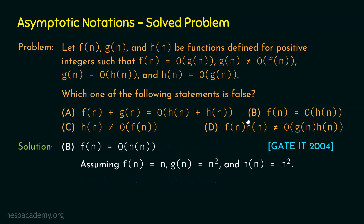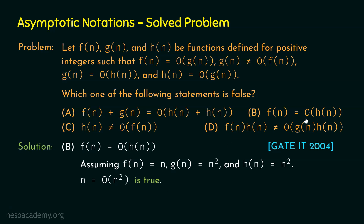Statement B: f(n) = O(h(n)). Replacing f(n) = n and h(n) = n², we get n = O(n²). These are polynomial functions and the growth rate of n² is greater than the growth rate of n, so n = O(n²) is true. Statement B is not false.